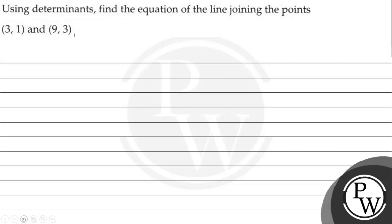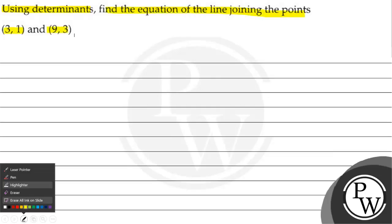Hello, let us read the question. The question says: using determinants, find the equation of the line joining the points (3,1) and (9,3).